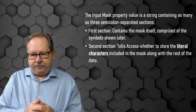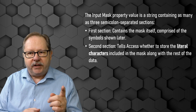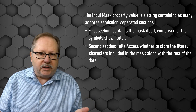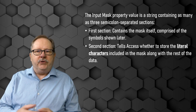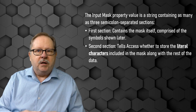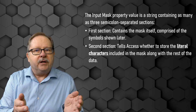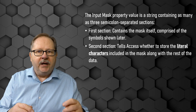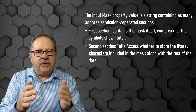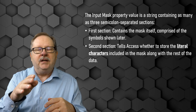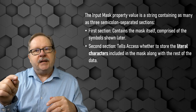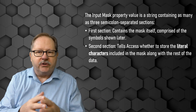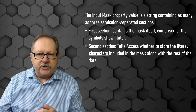The next section tells whether a character needs to be a literal character. A literal character is important — for example, when you're doing a telephone number and you want parentheses around the area code, you tell the input mask that you need a left paren as a literal character, then only numbers in the next three characters, then a literal close paren and then a dash.